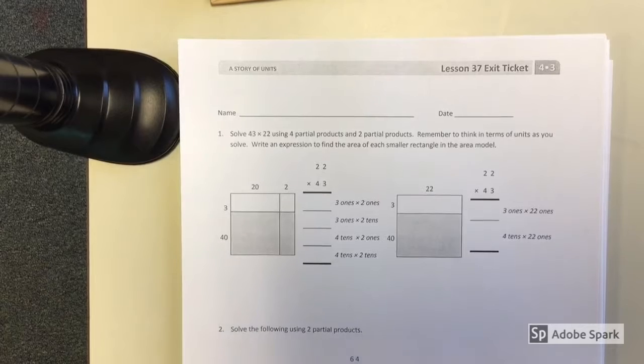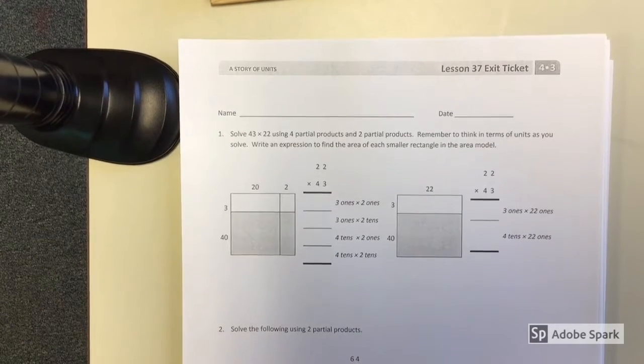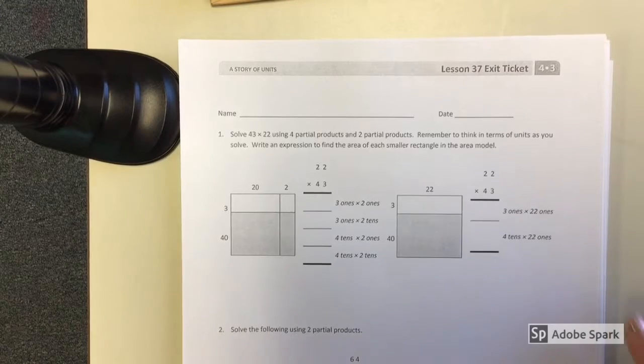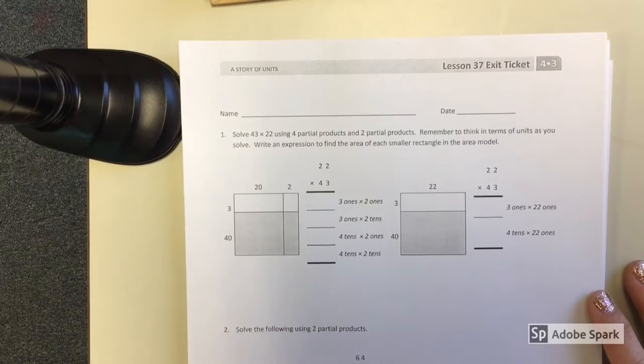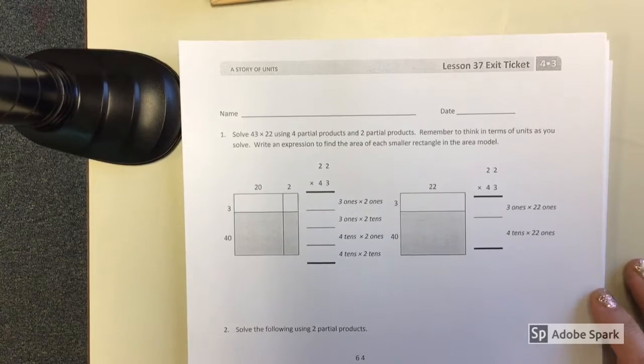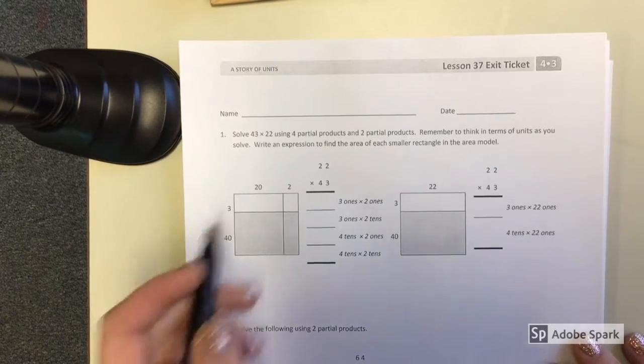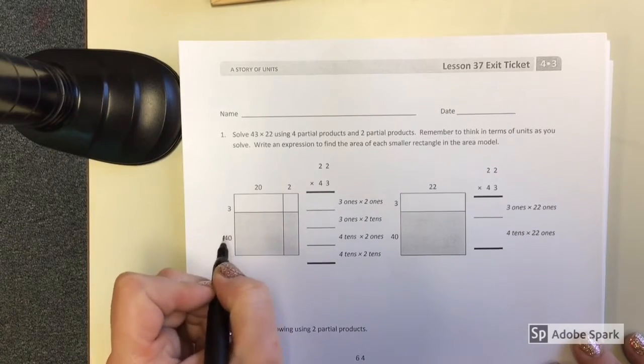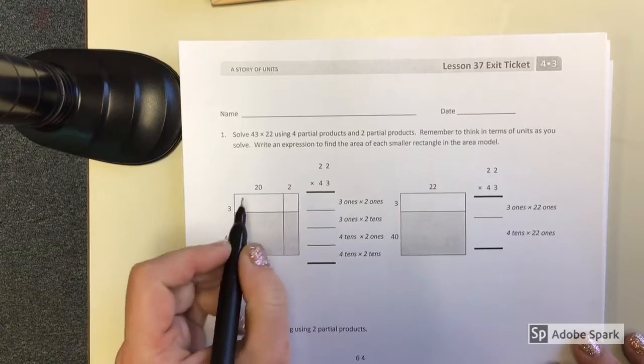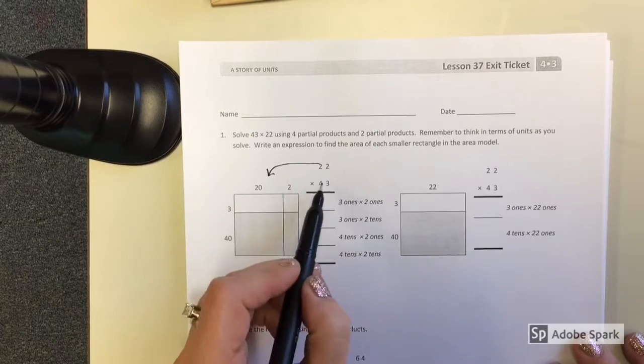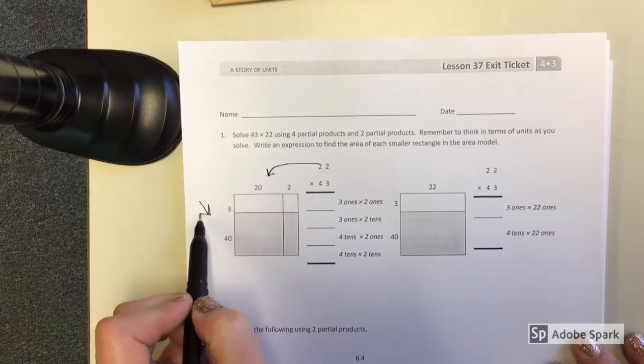Hey fourth grade, I'm going to make a video about our math from today. So today it's asking you to use an area model to find 4 partial products and 2 partial products. You can see how they've already separated my numbers for me. So here is 22 and here is 43.